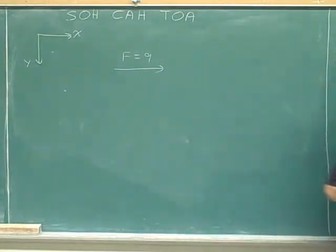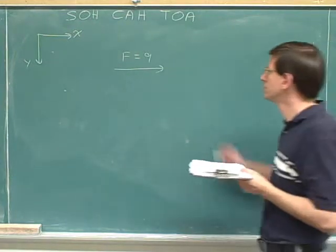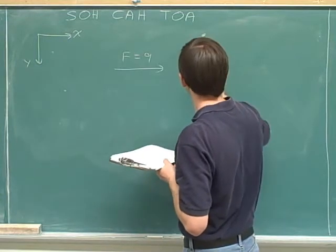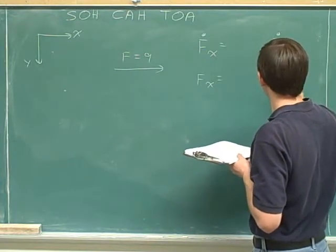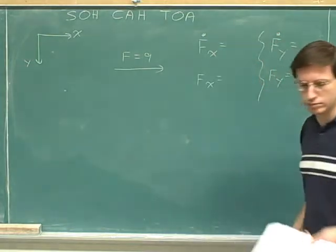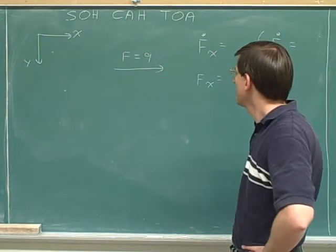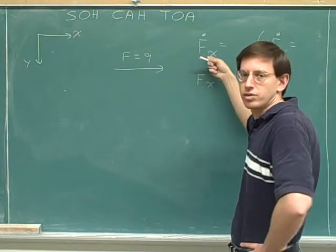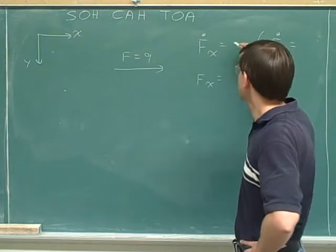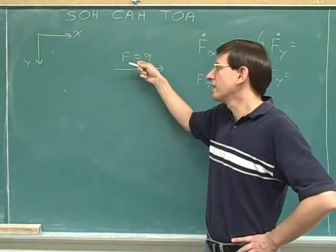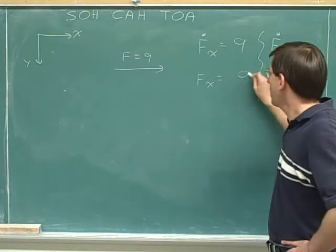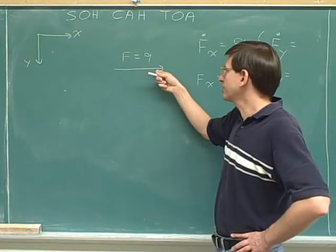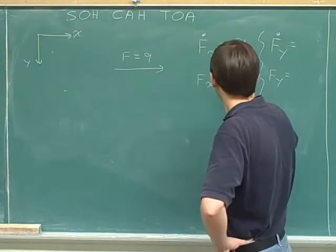Let's break this vector into components. Starting with the x component, the first thing we figured out is the magnitude of the x component. Clearly the magnitude of the x component is 9, because the entire vector is in the x component. So the entire length of 9 represents the x component. After we figured out the magnitude, now we can figure out the signed component. This vector is pointing to the right, and right is our positive direction, so that would be plus 9.